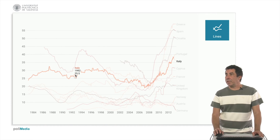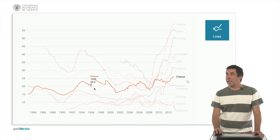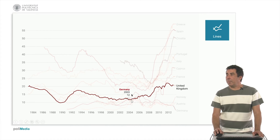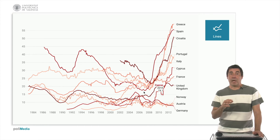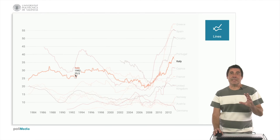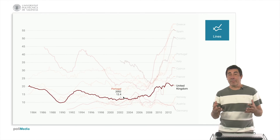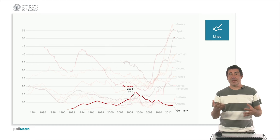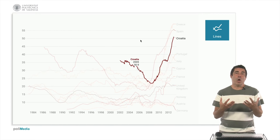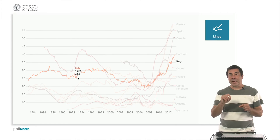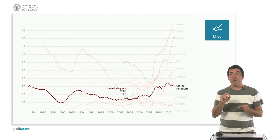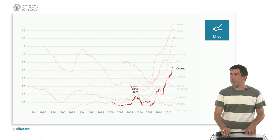If we use the pointer and pass over one of the lines, we can highlight it above the others. If we don't interact, we can see all of them, but selecting one isolates it. This is also interactive — every time we move over a line and select a point, we can see the information about the year and the average number of cigarettes sold per day.